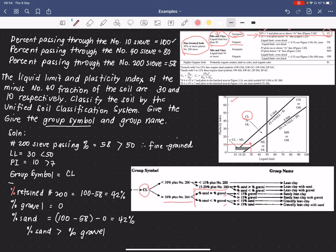Which means that the percentage sand is greater than the percentage of gravel. And we now consider this information here. The percentage sand is greater than the percentage gravel. We have to identify now the percentage gravel, if it is less than or greater than 15. And as we calculated, the percentage gravel is 0, so it is less than 15.